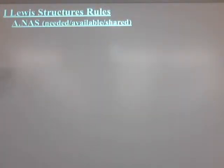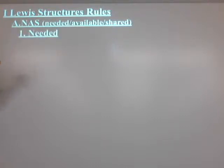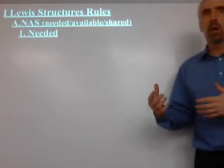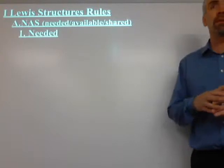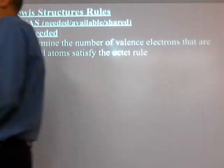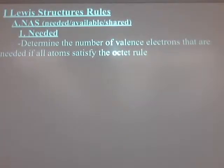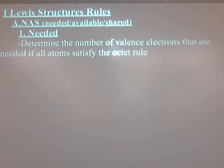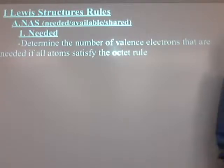I'm going to use a little system: Needed, Available, and Shared — NAS. 'Needed' means how many electrons are needed if everybody were to have an octet, or at least everybody were to be happy. Most atoms want eight electrons. The octet rule usually means eight, but hydrogen always wants two, because that will make him like helium, which is the most stable of the noble gases.